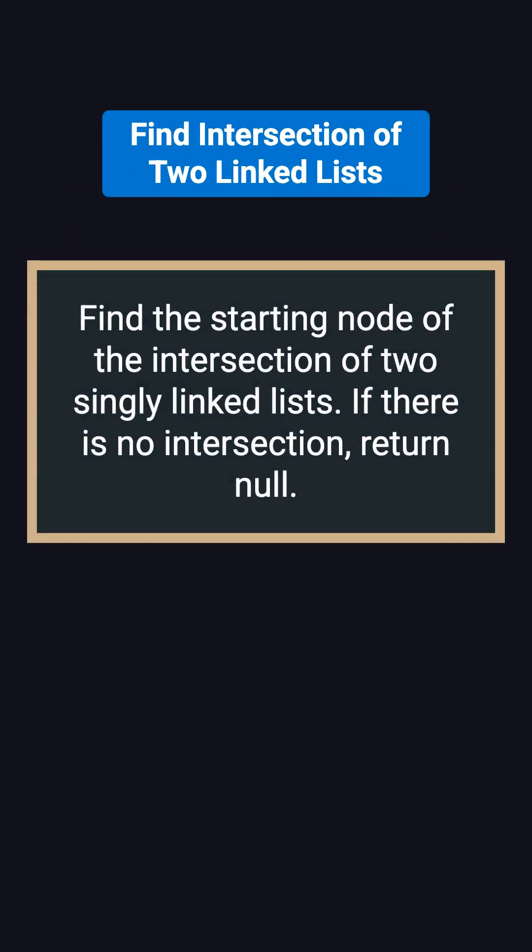Here's the problem. You are given two singly linked lists, and you need to find the node where they intersect. If they don't intersect, just return NULL.